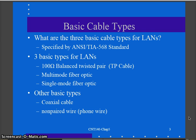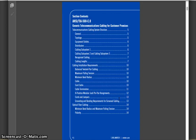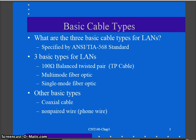The basic cable types found in LANs are specified in the ANSI/TIA 568 standard. Looking at the 568 C.0 part of the standard around page seven, the recognized cabling types are: 100-ohm balanced twisted pair — what we'd consider unshielded twisted pair or CAT5 cabling — multimode fiber, and single-mode fiber. Those are the three accepted types of cabling for use in LANs.